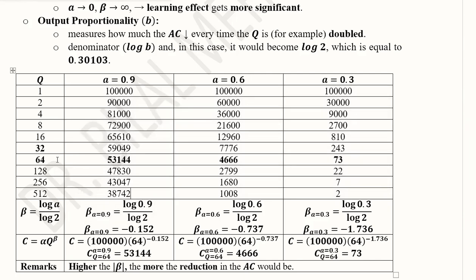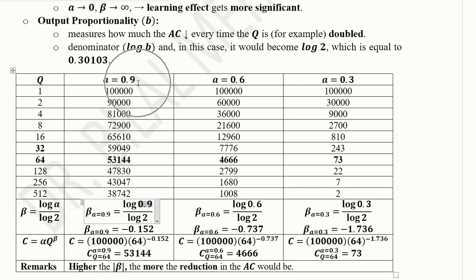Choosing output = 64 for analysis, we calculate beta for each value of 'a' using the formula β = log(a) / log(b), where b = 2. Substituting a = 0.9 gives β = −0.152; a = 0.6 gives β = −0.737; and a = 0.3 gives β = −1.736. So we have three values of beta corresponding to the three values of 'a', which are then used in the learning curve equation.